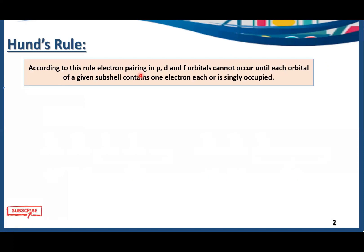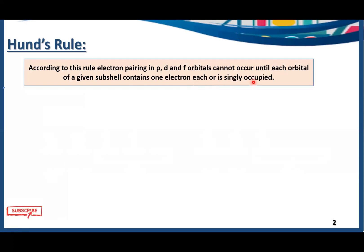According to this rule, electron pairing in P, D, and F orbitals cannot occur until each orbital of a given subshell contains one electron — each is singly occupied. Simply, we can say Hund's Rule is all about the pairing of electrons.